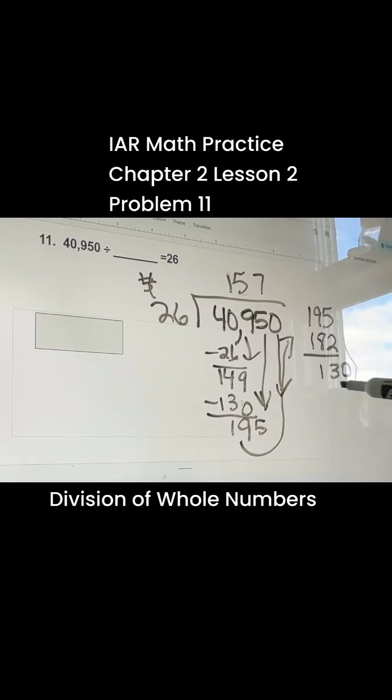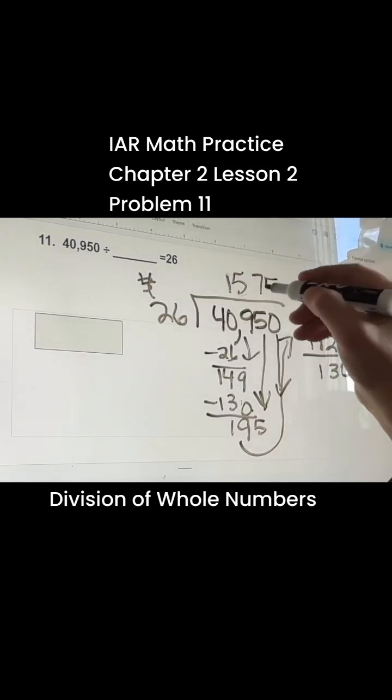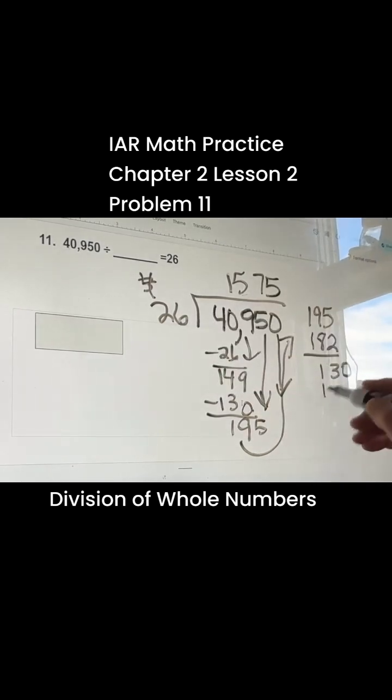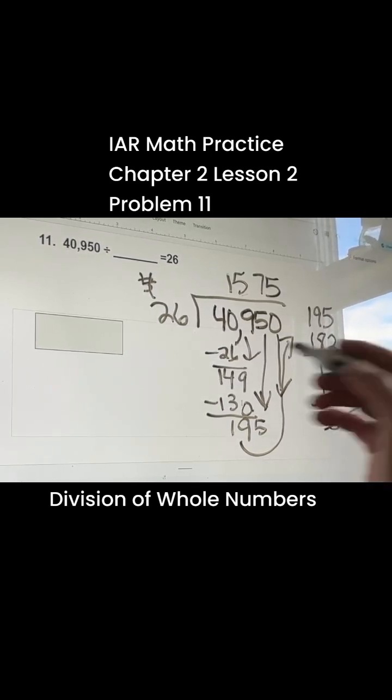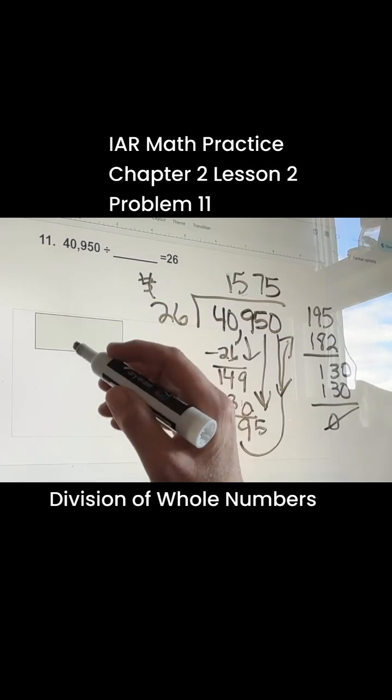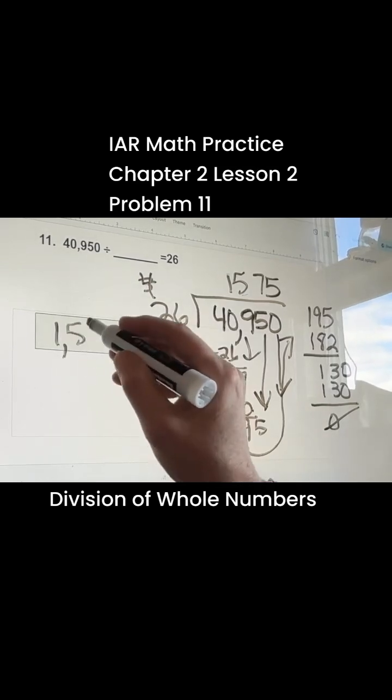So here, 26 goes into 130, we know, because I already did it, 5 times. 5 times 26 is 30, 130 total. So your answer would be 1,575.